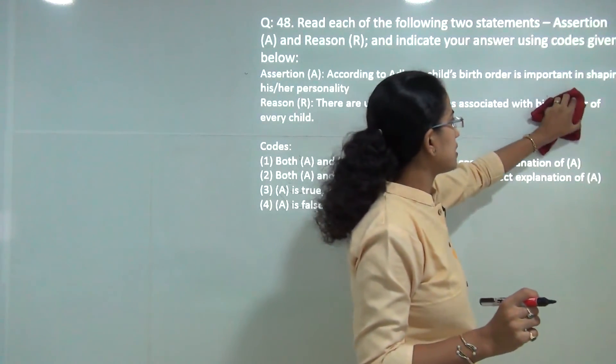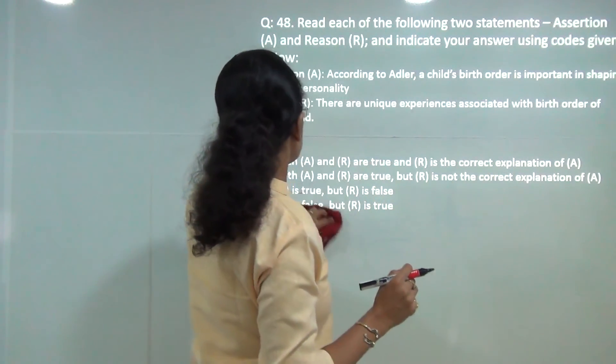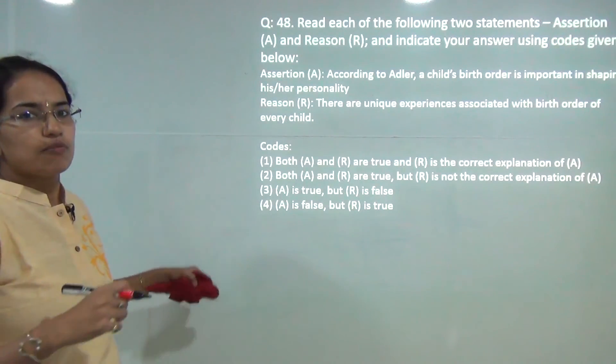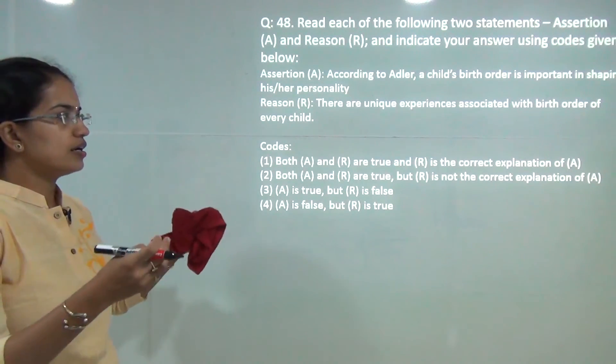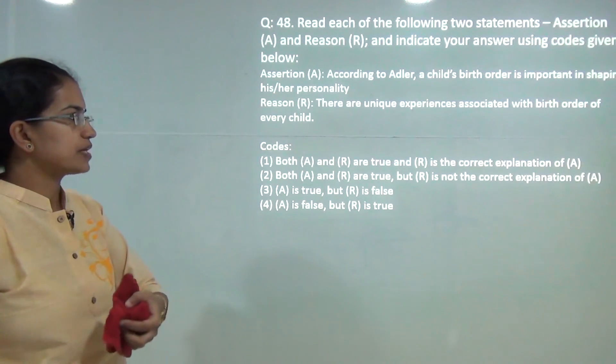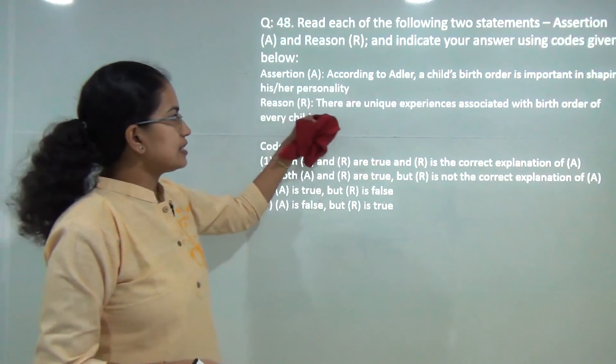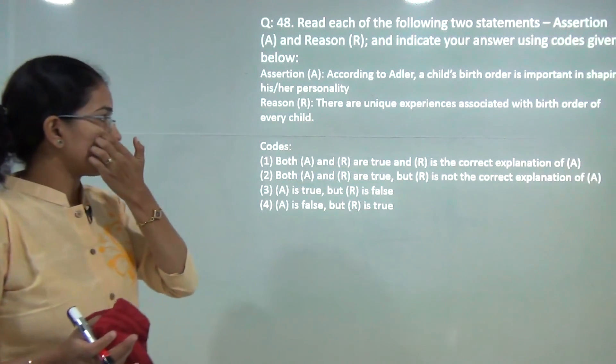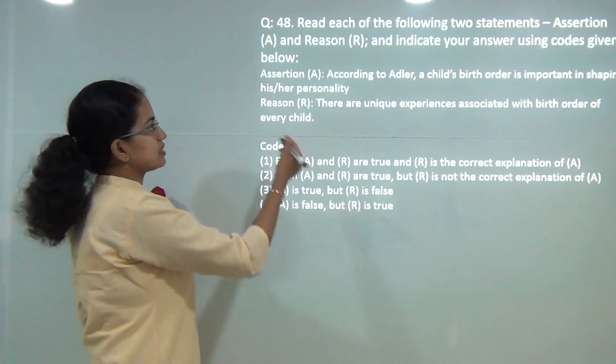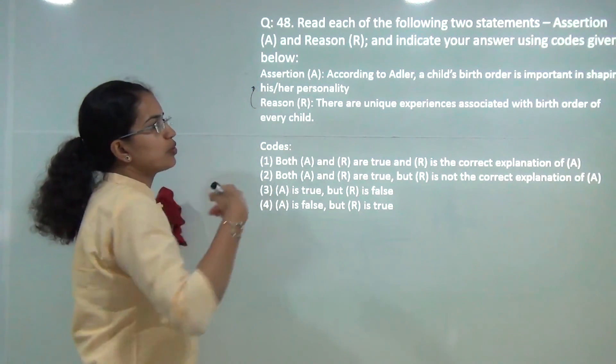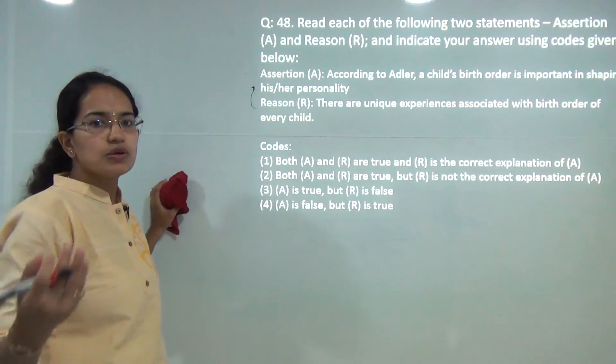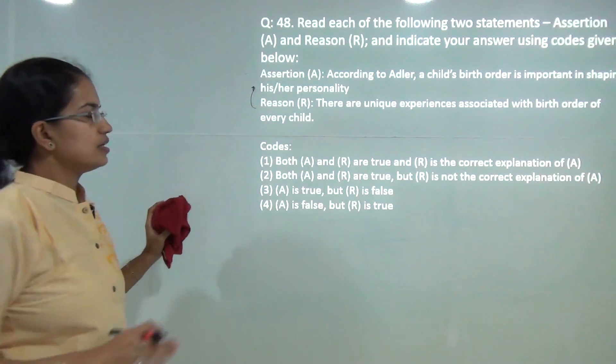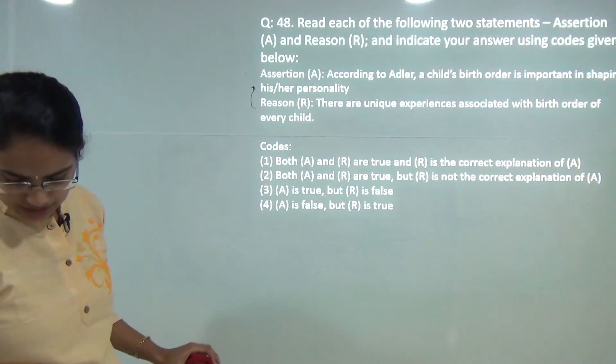According to Adler, child birth order is important in shaping the personality. It says that the child who is first born in the family would have more leadership qualities as compared to the last one. And there are unique experiences associated with the birth order of every child. That is correct because the first child would have more responsibilities as compared to the last child in the family. Therefore reason correctly explains the assertion. So one would be the correct answer.